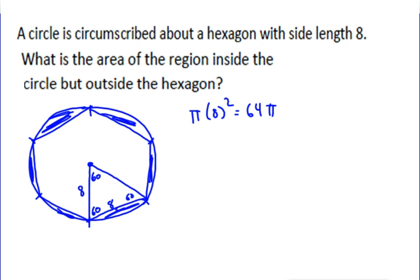Now we know the area of the circle is 64π, so to get the area outside the hexagon but inside the circle, we subtract away the hexagon. The formula for the area of the hexagon is (side²√3)/4 to find the area of one of these equilateral triangles. That's the formula for equilateral triangles: (side²√3)/4.